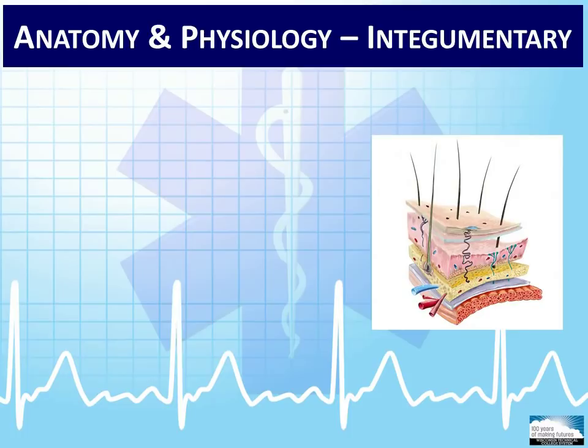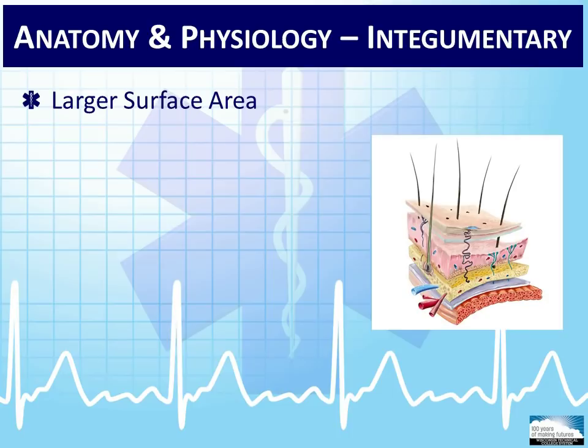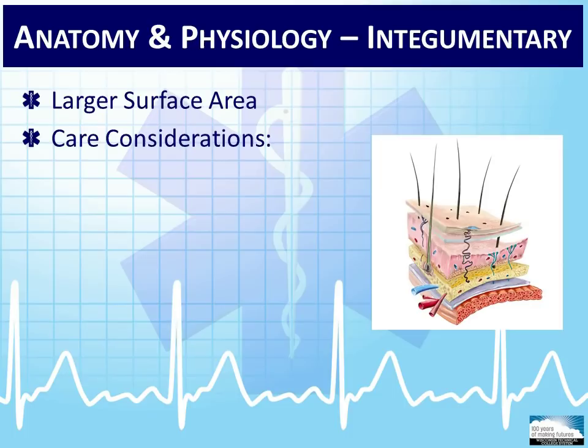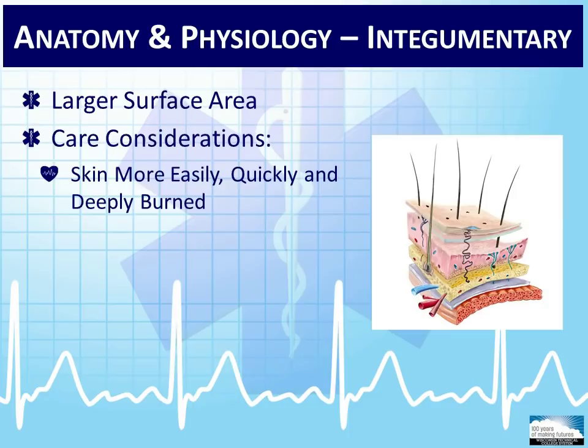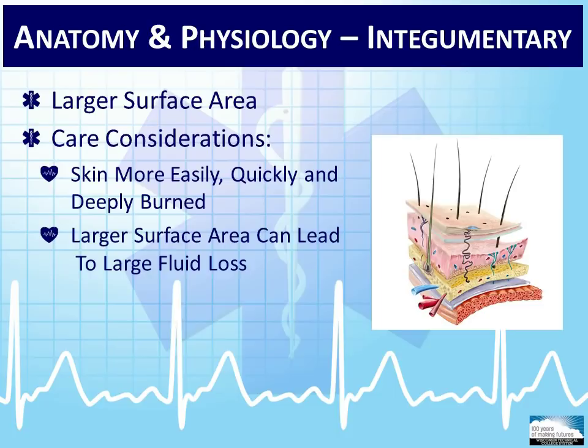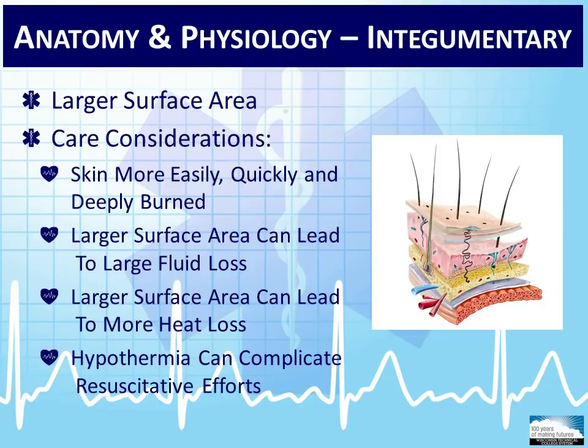The skin is the largest organ in the body and can offer the EMT a lot of information about a patient's circulation and perfusion. In the pediatric patient, the skin has a larger surface area in proportion to body mass when compared to an adult. This can become an issue during the management of burn and environmental injuries. The skin layers are thinner and can be more easily, quickly, and deeply burned than adult skin. Given the larger surface area, there is a potential for greater fluid and heat loss, and any resulting hypothermia can complicate treatment and resuscitative efforts.